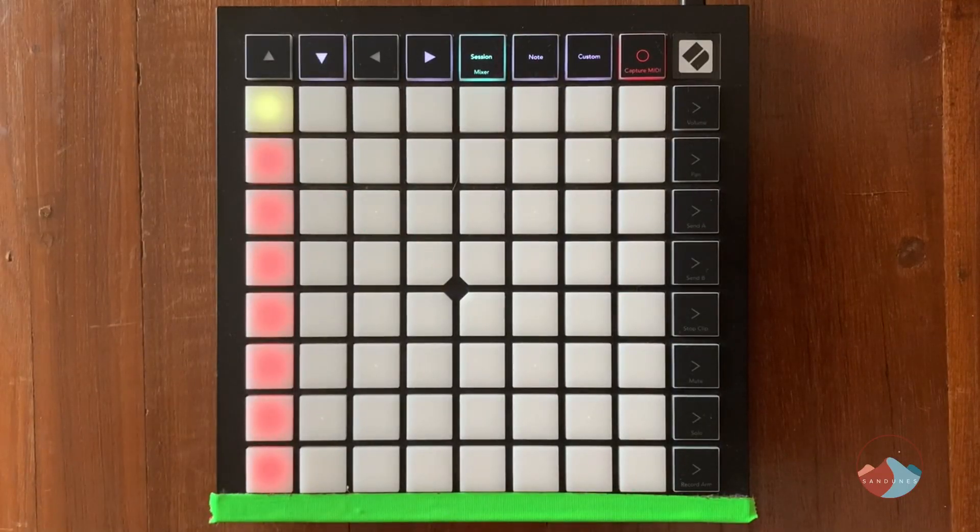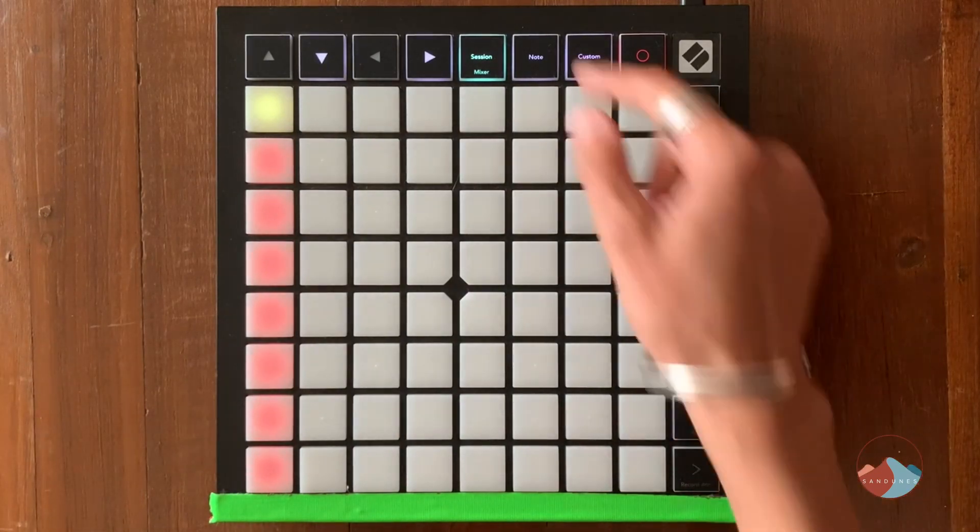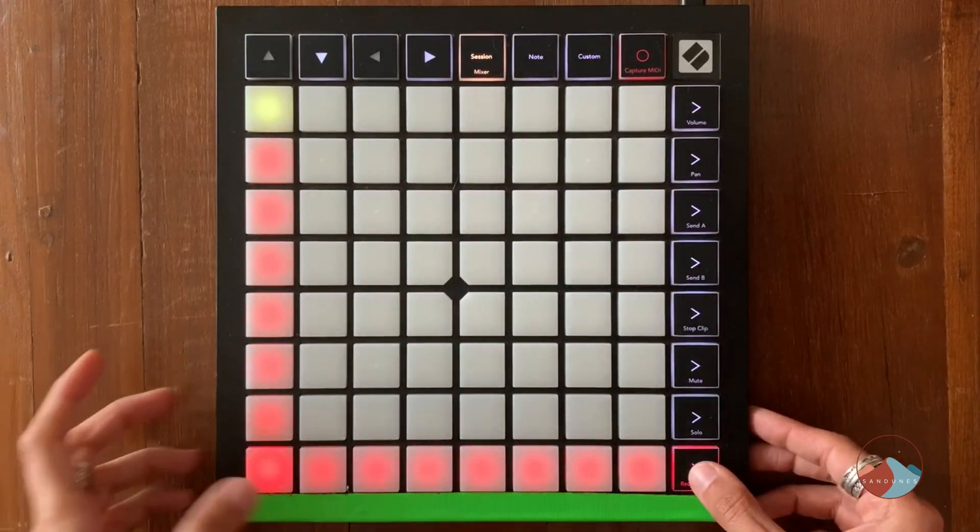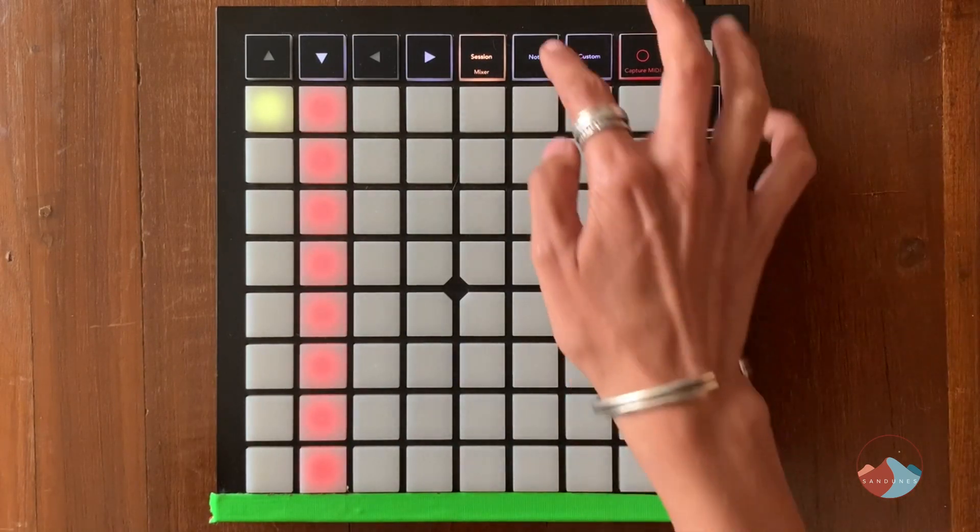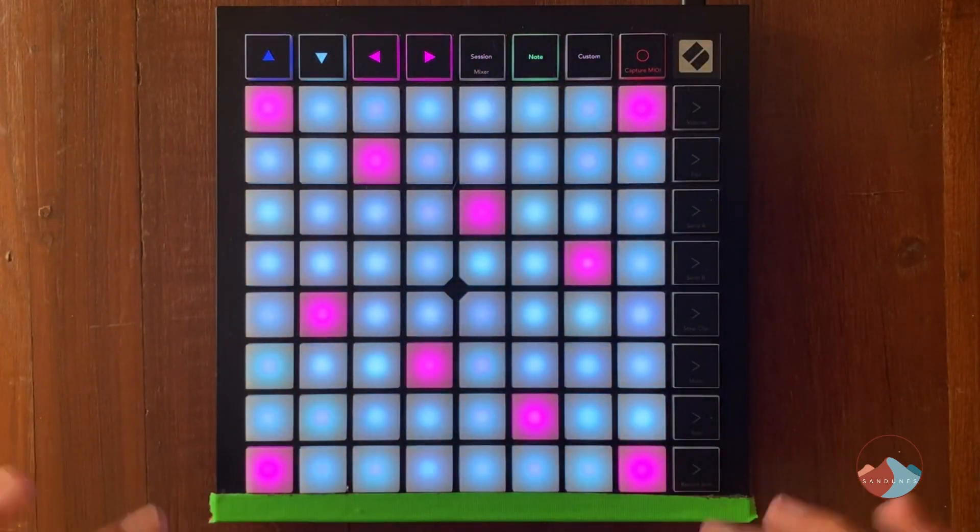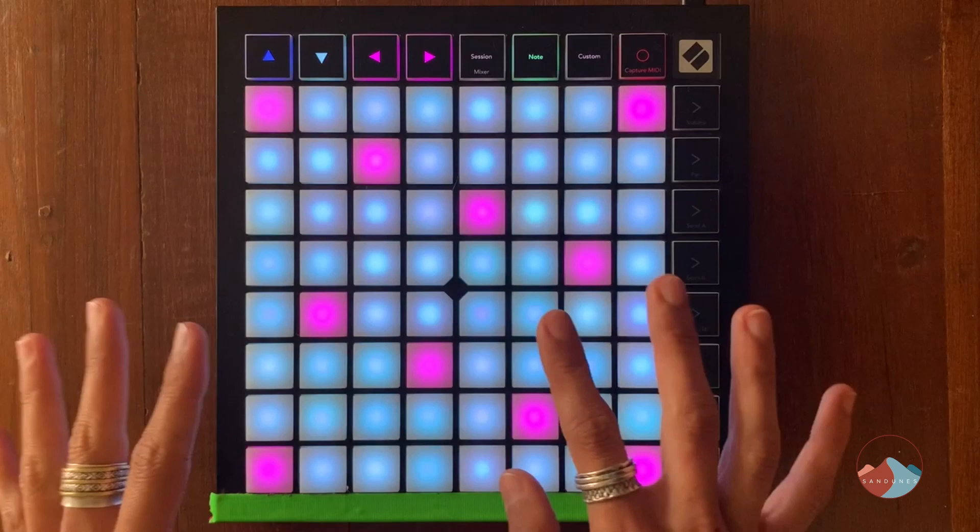The next thing I'm going to do is add some chords. I have a synth loaded up in my second track and I need to record arm that second track in Ableton Live's session view. Switching to note mode allows me to play out the actual synth part on the Launchpad X.